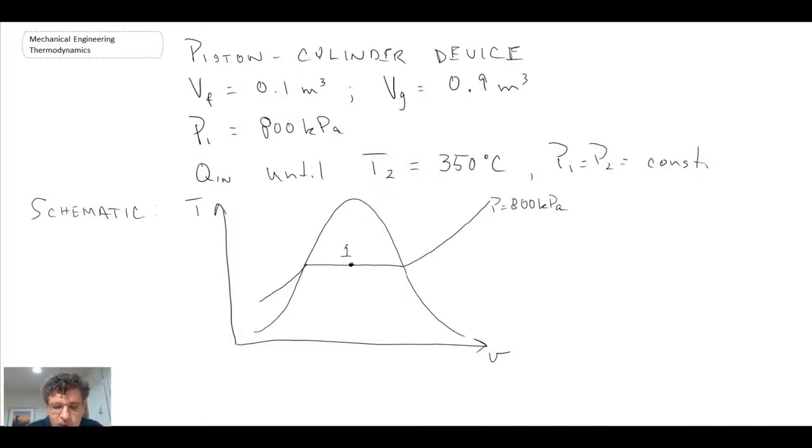And then with our process, what we're doing is we're adding heat, and we're heating up the fluid, or the system. And eventually we're going to move up to some point here in our superheated region, and that would be at a temperature of 350 degrees C. So that's what we know about the process in terms of the schematic. So let's go into the analysis of this problem.